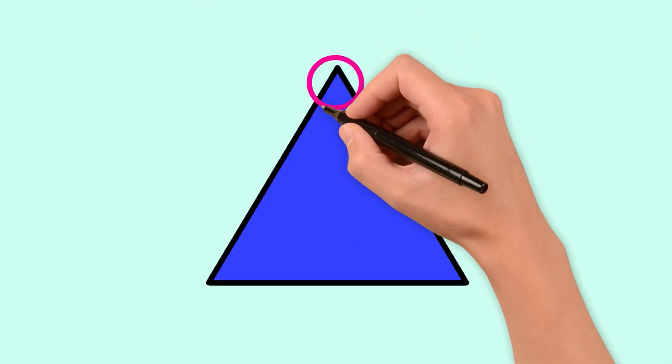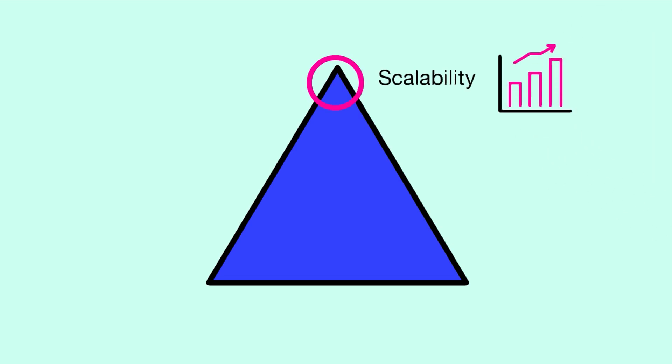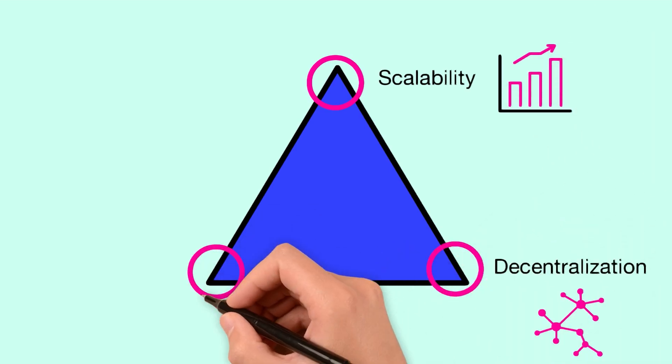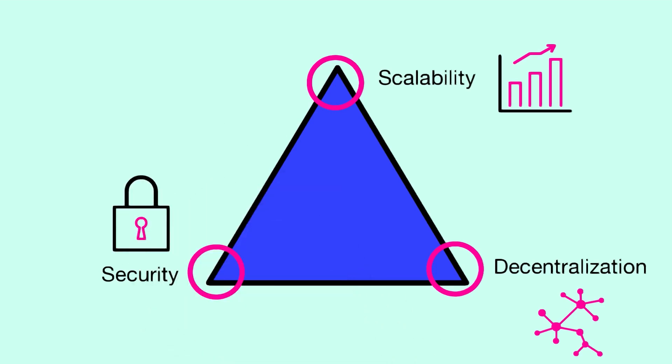Blockchains aim for three key properties: scalability, decentralization, and security. But the blockchain trilemma states you can only optimize two at any time without losing the third. This challenge leads to different approaches in handling transaction loads.